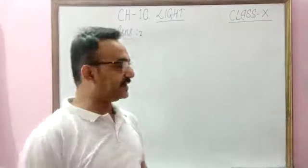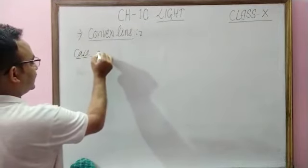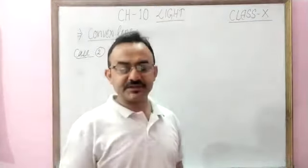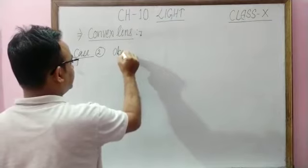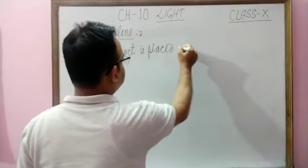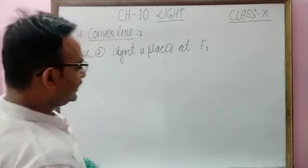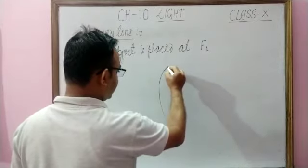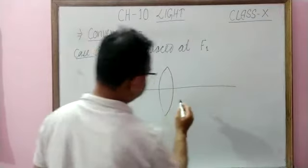Now the second case is here: when object is placed at the principal focus F1. You have to draw the ray diagram. Suppose this one is here — the convex lens.